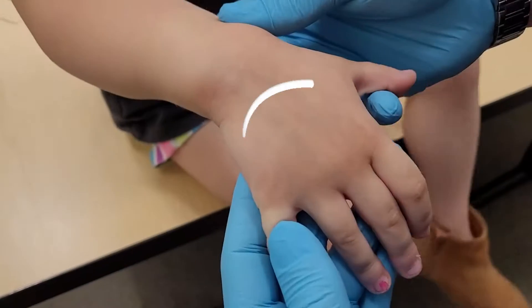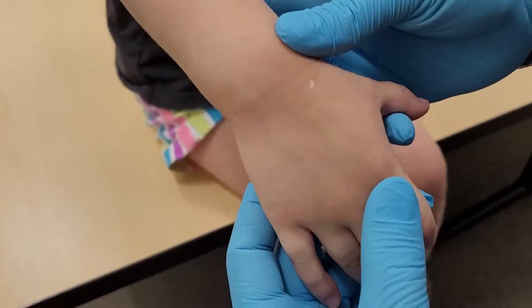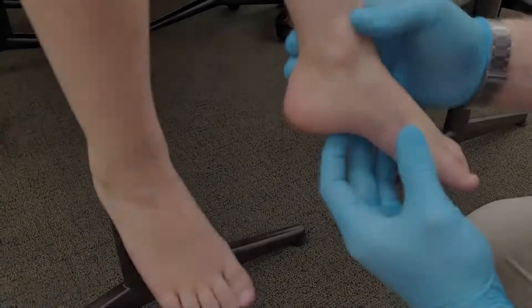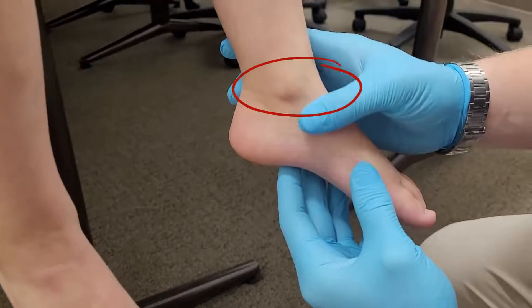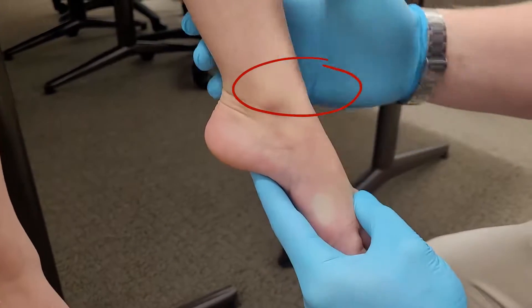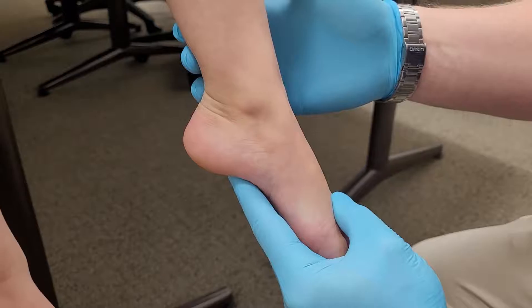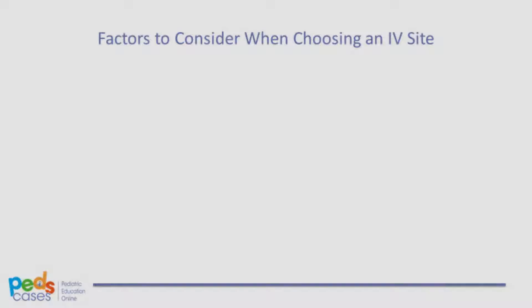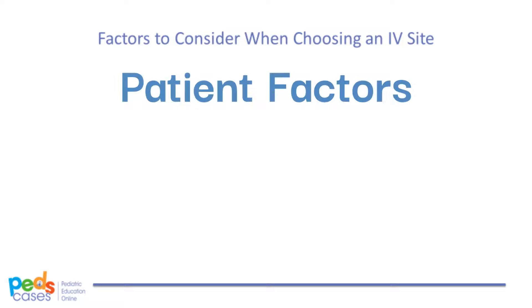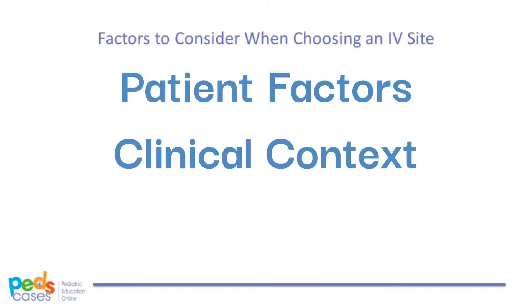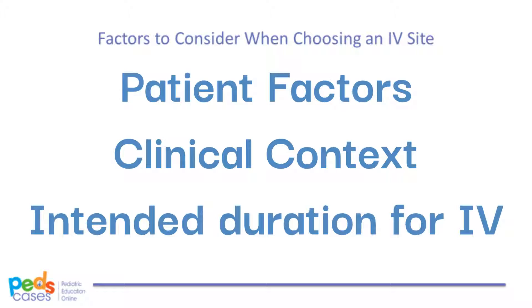The antecubital fossa is an easier site to cannulate, but presents challenges for children who tend to be less compliant, and portends catheter kinking and infiltration if an armboard is not applied to prevent flexion at the elbow. The dorsal hand veins are convenient, but often small. The great saphenous vein in the ankle is large and anatomically consistent, but if cannulated, limits the child's ability to ambulate. Scalp veins are available, but often require a portion of the patient's head to be shaved. Choosing a suitable site will depend on patient characteristics, purpose or context of the IV placement, and intended duration of cannulization.